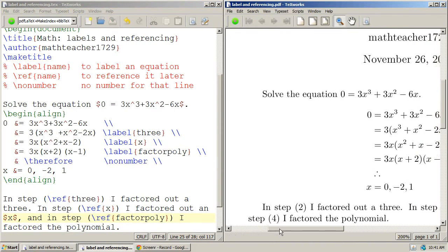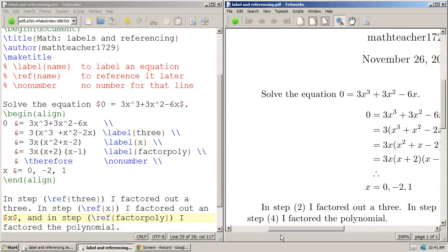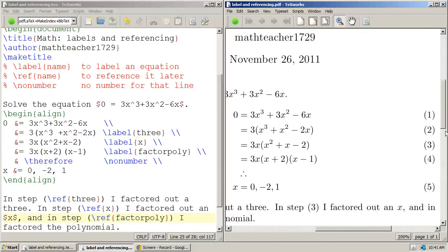So, there you go. In step 2, I factored out a 3. In step 3, I factored out an x. And in step 4, I factored the polynomial. And there you can see step 2 is where we factored out 3. Step 3 is where we factored out the x. Step 4 is where we factored the polynomial. Hope this has been helpful.